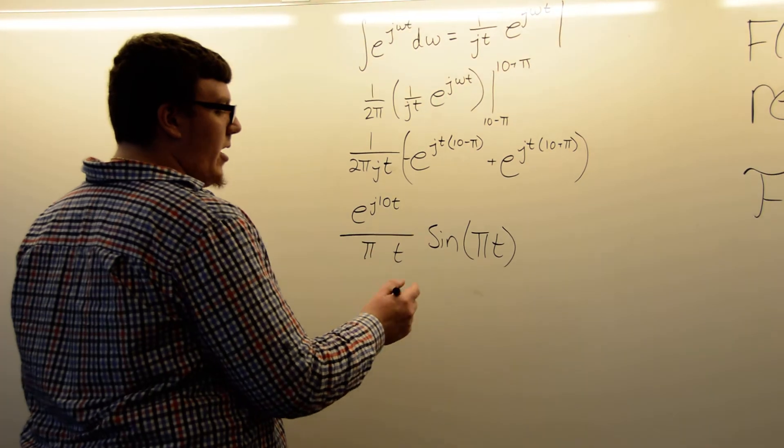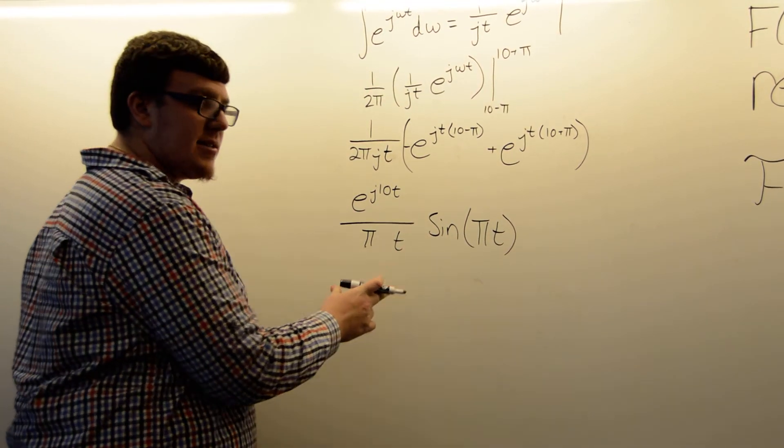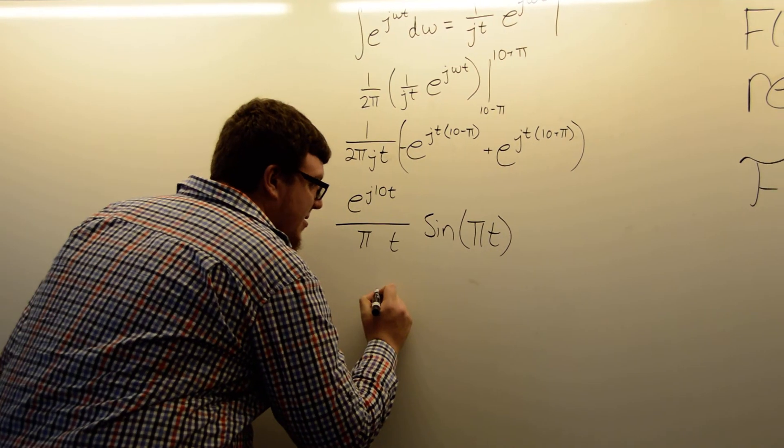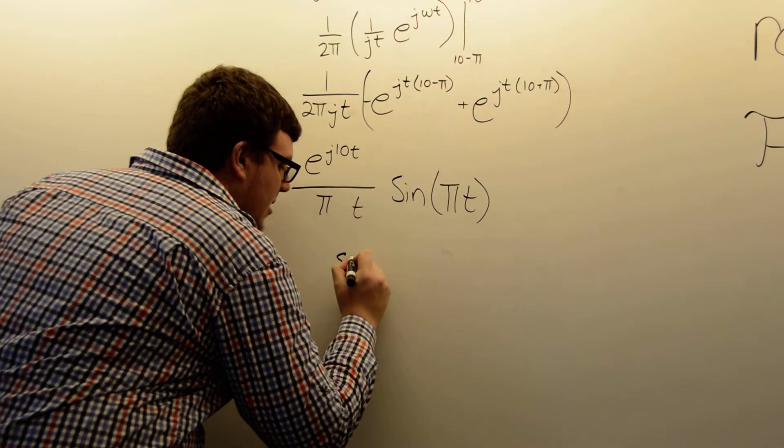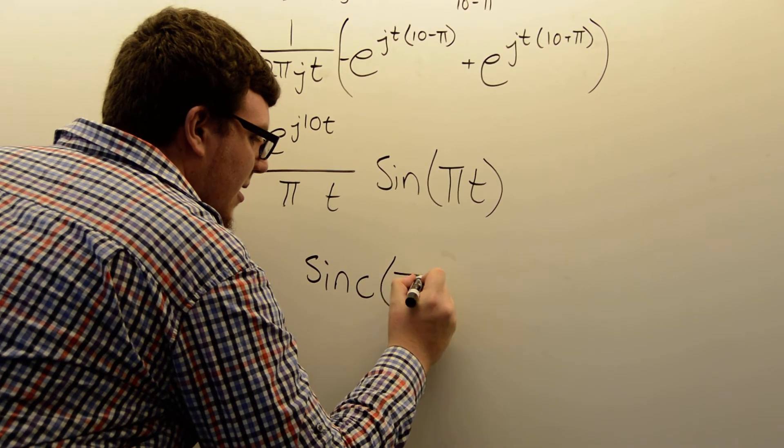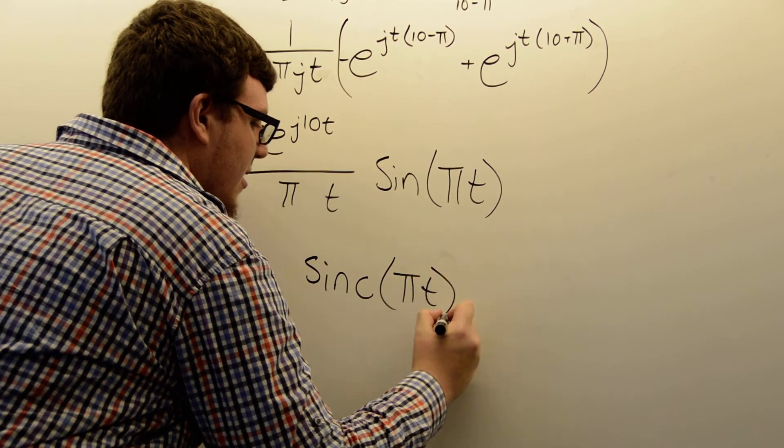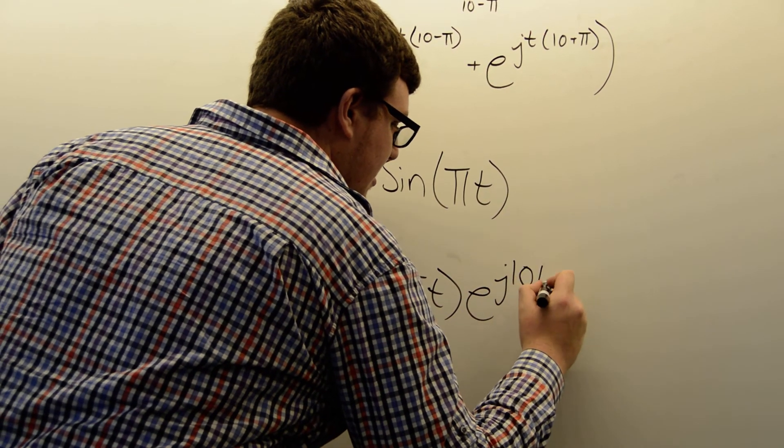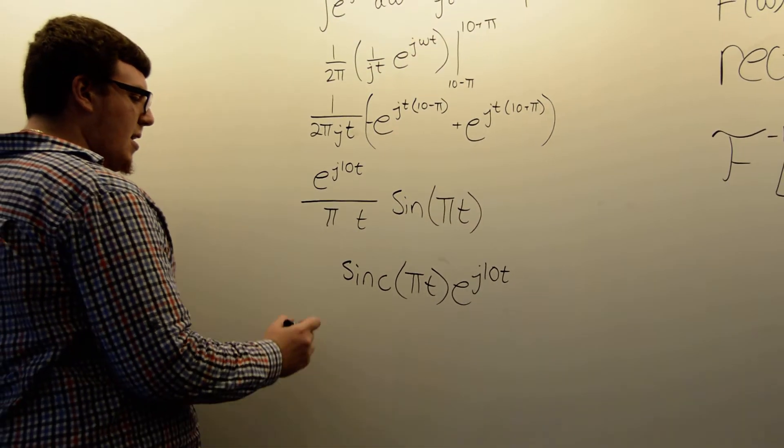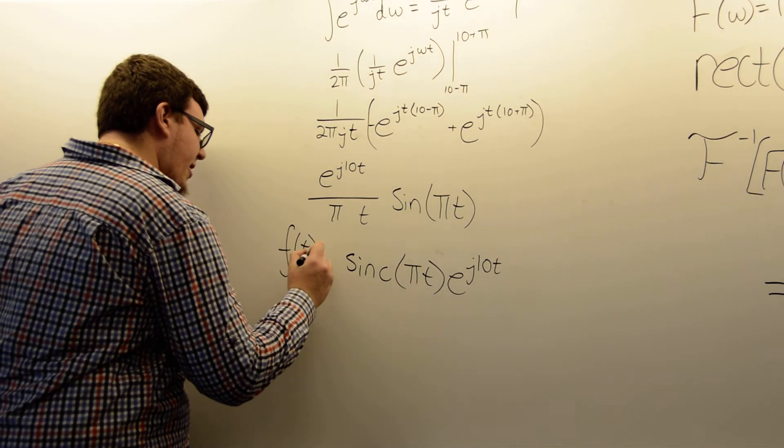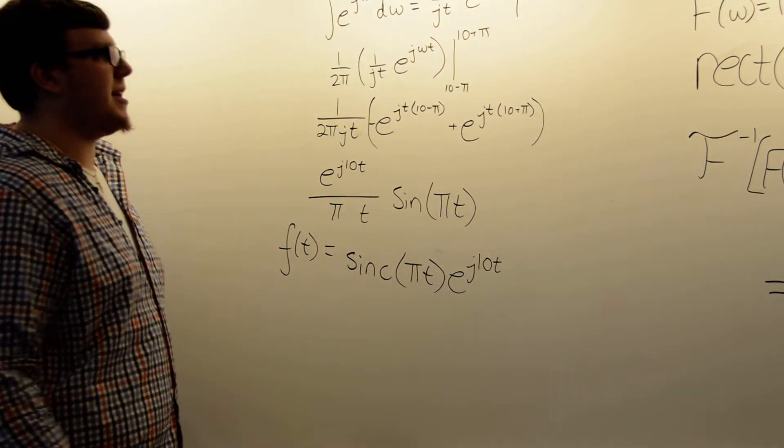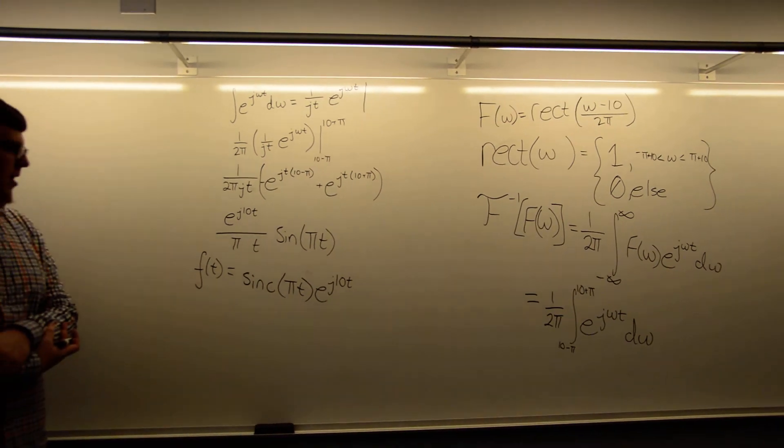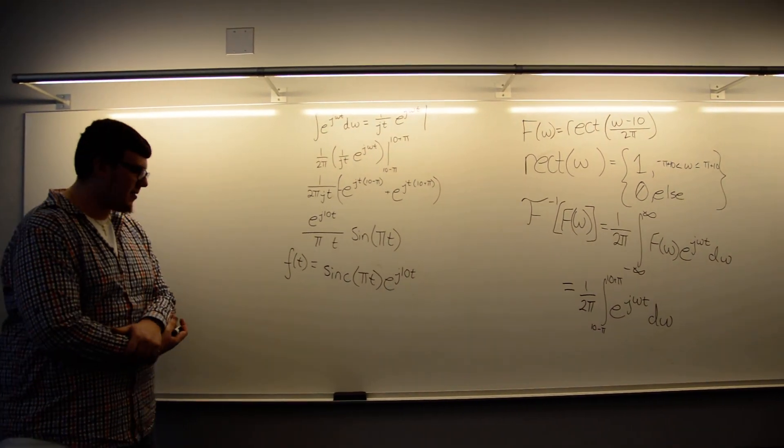So, we also know that sine of x over x is how we define our sinc function. So, we can rewrite this finally as the sinc of πt times e to the j10t. And so, that is the time varying function represented by our original frequency domain function. I hope you guys learned something, and have a good day.